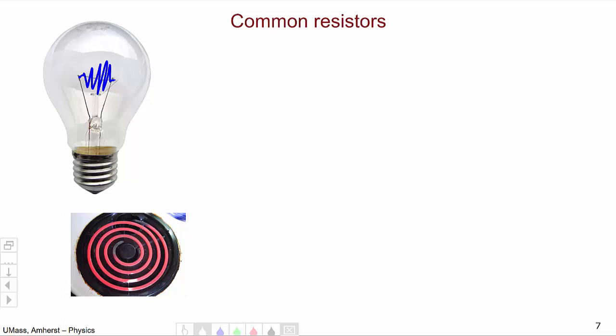Another very easy resistor to visualize is the heating element on an electric stove. It's just one big resistor and when we run current through it it gets hot and heats your food.